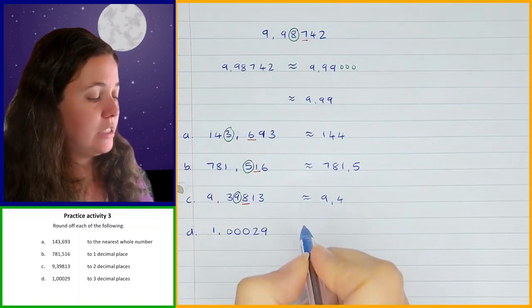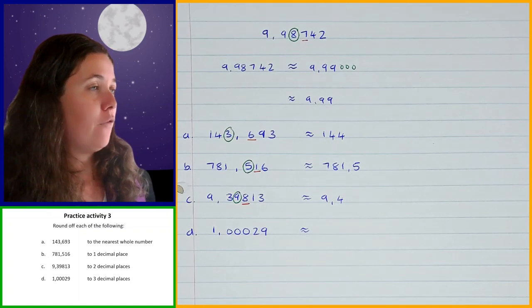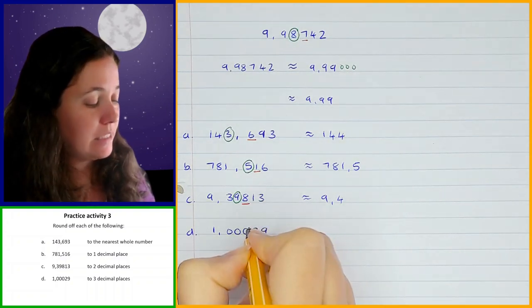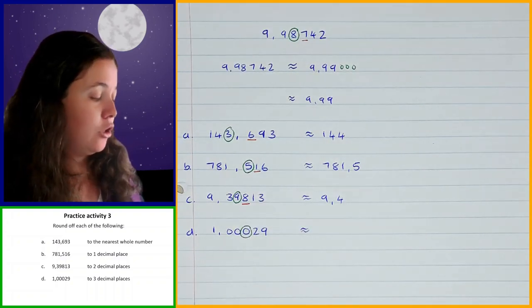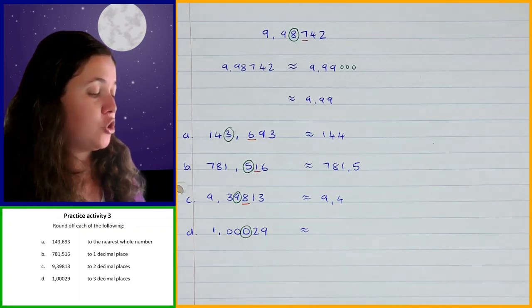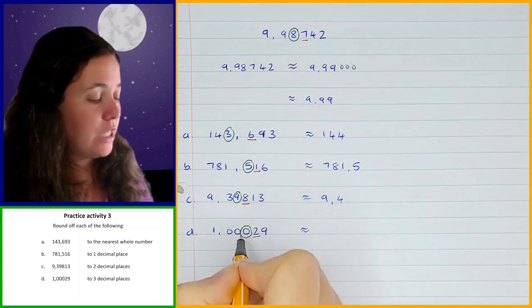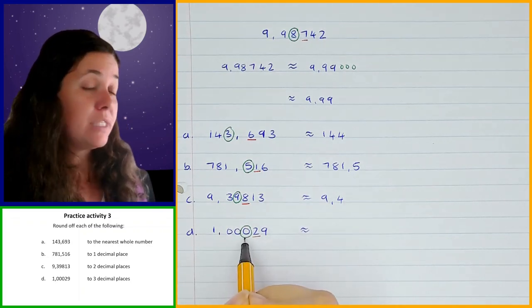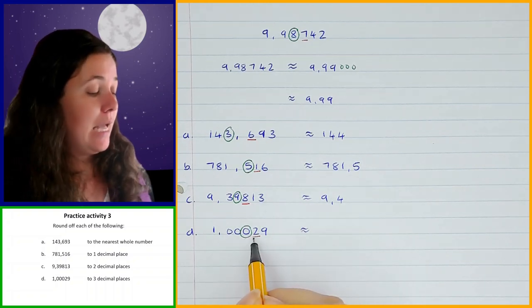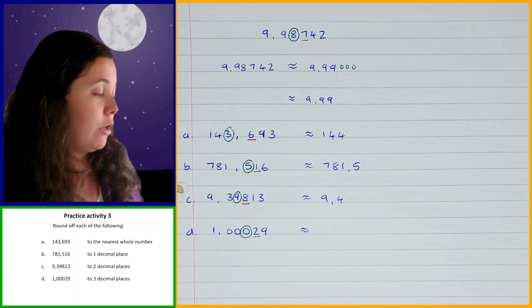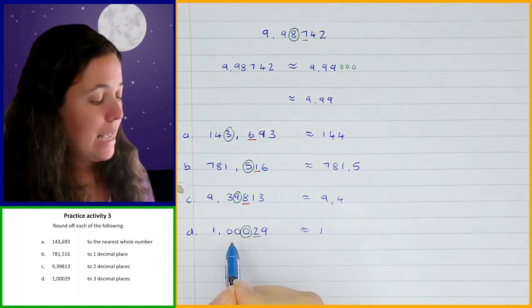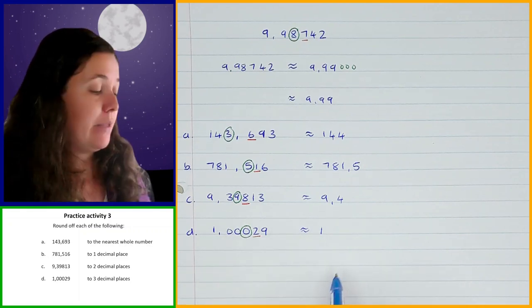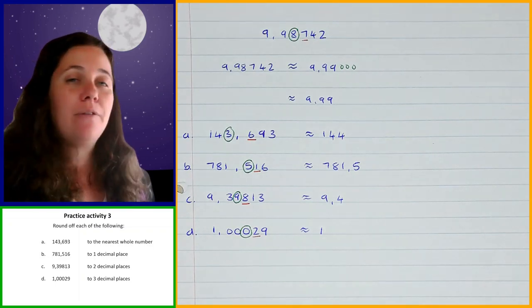The last one, question D: we have to round off to three decimal places. The digit in the third decimal place is zero. Looking at the digit straight after it — the two — two is in the four or less category, so the zero stays zero and everything after it is also zero. So when I round this off, everything after the decimal point is zeros and I don't need to write any of them. The answer is just 1.